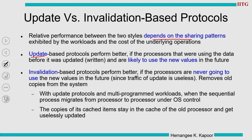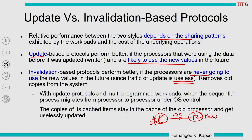Update versus invalidation depends on the sharing patterns. Use update when updated data is likely to be used by other processors. Use invalidation when processors are never going to use those data items — it reduces useless traffic. When a process moves to another processor, its stale copies in the previous processor's cache will keep getting updated unnecessarily under an update-based protocol; invalidation removes those stale copies.